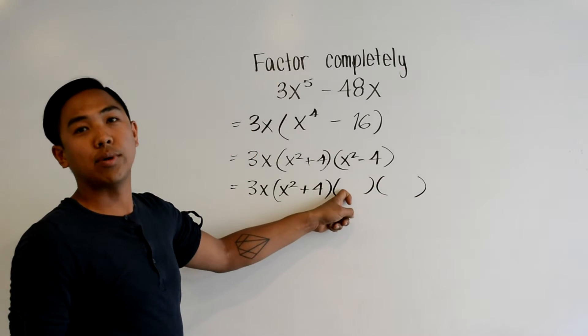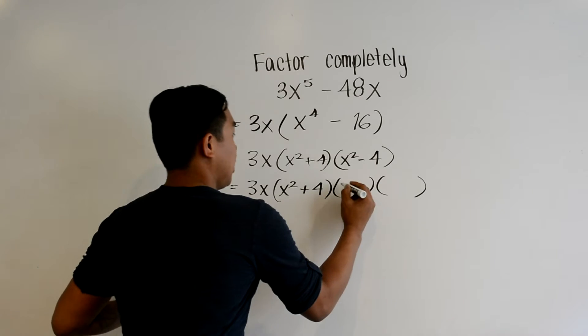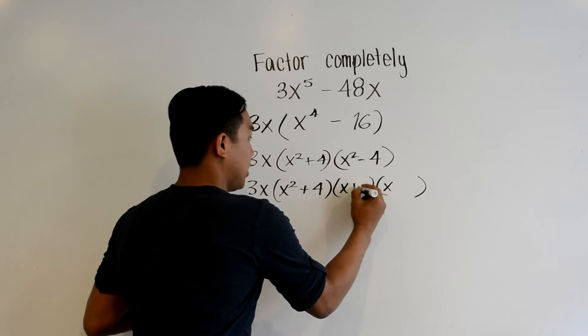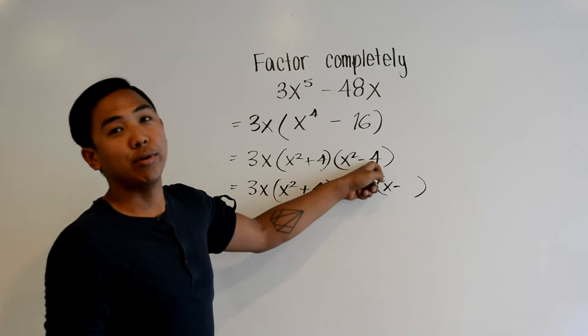So this is the square root of x squared which is x, separated by a positive and negative sign, and then the square root of 4 which is 2.